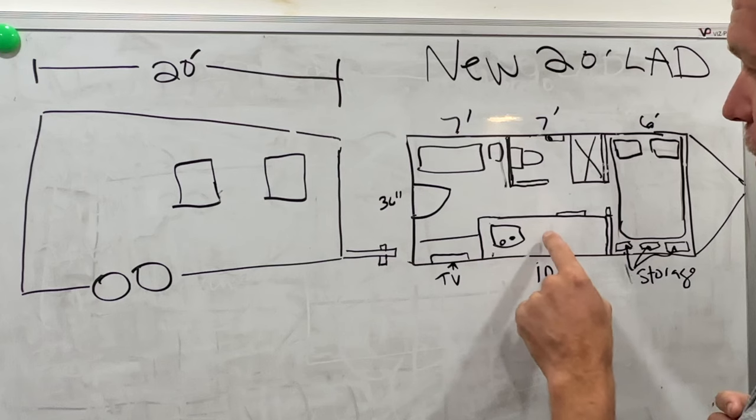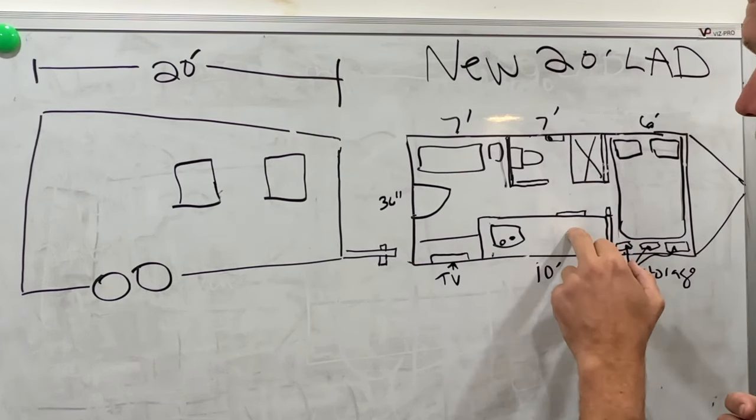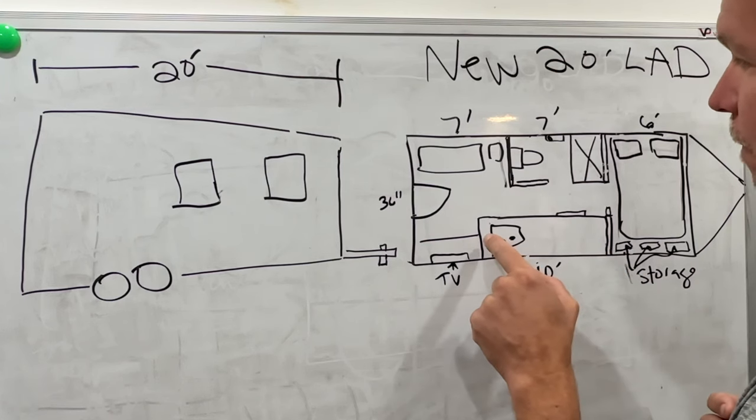You'd have a sink and we'd put a cooktop somewhere along here, so you have a large pantry here. So pantry, fridge, washer and dryer, and sink.